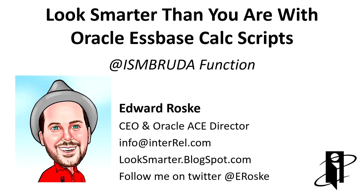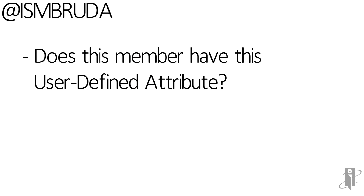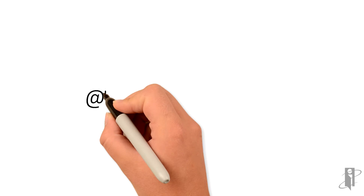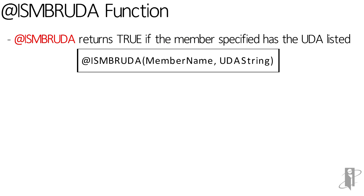Welcome to the isMemberUDA function. This function returns true if a specified member has a specified UDA, or user defined attribute. The syntax is @isMemberUDA, then the exact member you want to check, and then the exact string you want to check that member for.